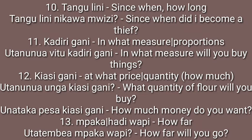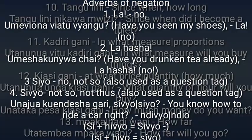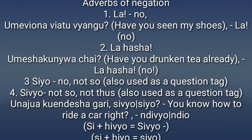Number twelve is 'kiasi gani,' meaning 'at what price or quantity' — how much. Example: 'utanunua unga kiasi gani?' — what quantity of flour will you buy? Very commonly used, especially by shopkeepers. Also: 'unataka pesa kiasi gani?' — how much money do you want? Then we have 'mpaka' or 'hadi wapi,' meaning 'how far.' Example: 'utatembea mpaka wapi?' — how far will you walk?